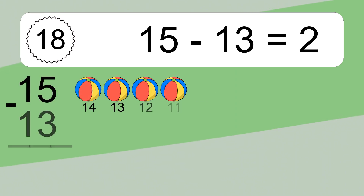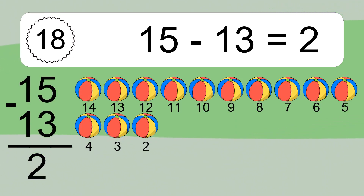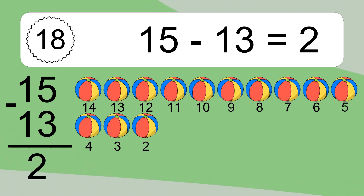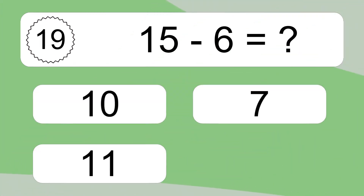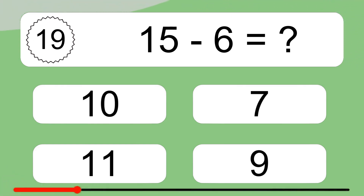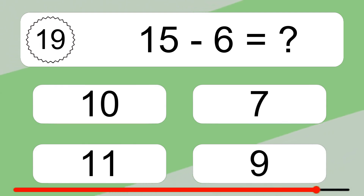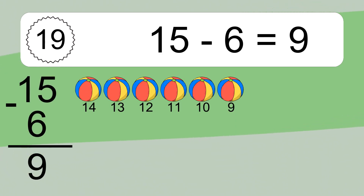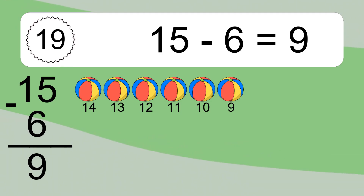15 minus 13 equals 2. Let's count it: 14, 13, 12, 11, 10, 9, 8, 7, 6, 5, 4, 3, 2. 15 minus 6 equals what? 15 minus 6 equals 9. Let's count it: 14, 13, 12, 11, 10, 9.